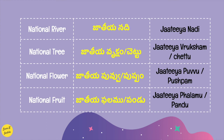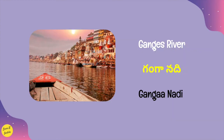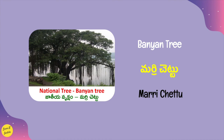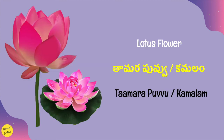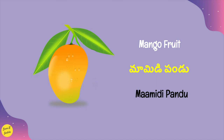The national river of India is the Ganges River, called Ganga Nadi in Telugu. The national tree is the Banyan tree, called Marri Chettu. The national flower is the Lotus flower, called Tamarapuvu or Kamalam in Telugu. The national fruit is Mango, called Maamidi Pandu in Telugu.